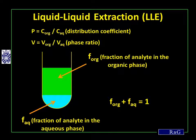We also talk about the phase ratio. The phase ratio V is the volume of the organic phase divided by the aqueous phase. It is useful to express the amount of analyte found in the organic phase and in the aqueous phase. The amount in the organic phase is called F-Org, or the fraction of analyte in the organic phase, and equally F-Aq for the fraction in the aqueous phase. Unless there are irreversible losses due to adsorption, the fraction in the organic phase plus the fraction in the aqueous phase should add up to 100%, or 1.